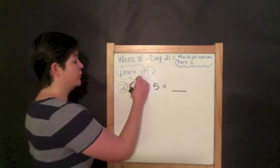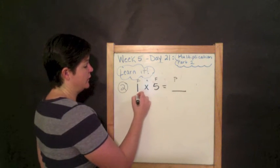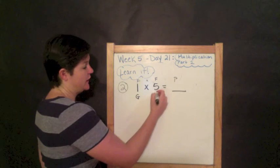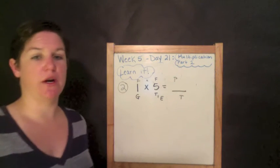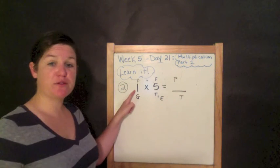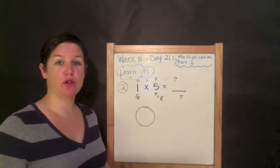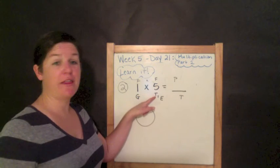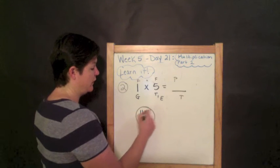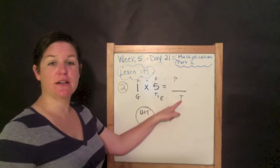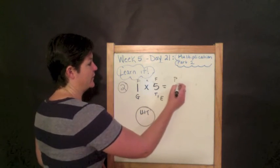Number two. We know factor times factor equals the product, or number of groups times things in each equals the total, which is also known as the product. Our first factor is one, so we have one group. Inside that group there are five things in each because five is our second factor. One, two, three, four, five — five tally marks, so the answer is five.